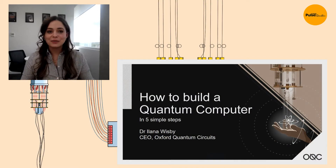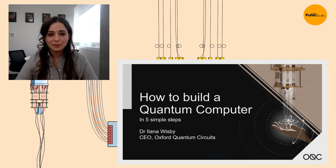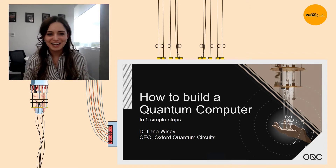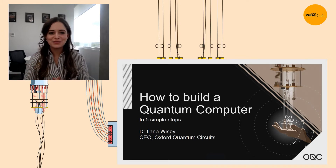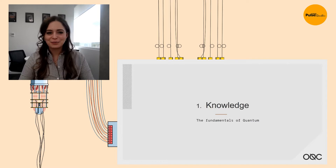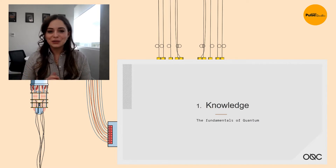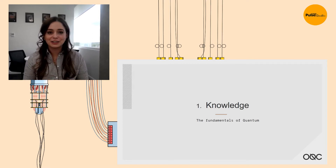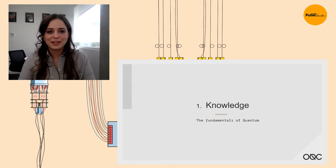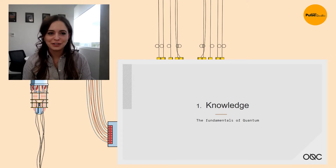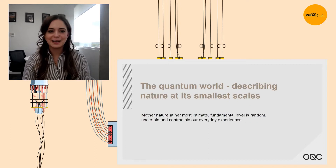Today we do have the UK's most advanced and only commercially available quantum computer, and I'm going to share with you today how to build a quantum computer together in five very simple steps. So first of all we need some quantum knowledge. Amit did a fantastic job of covering some of this but we'll get up to speed quickly together with some of those fundamental concepts of quantum mechanics.